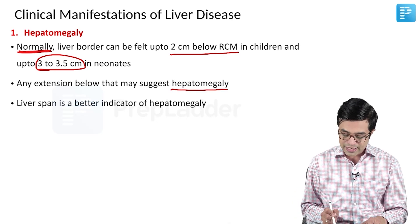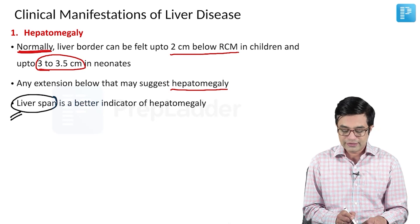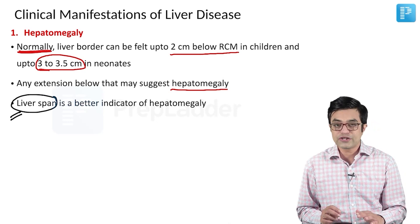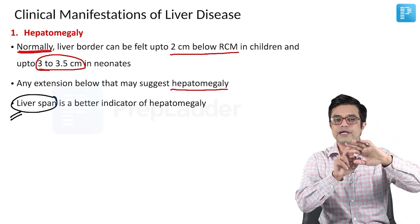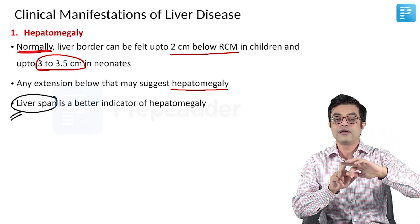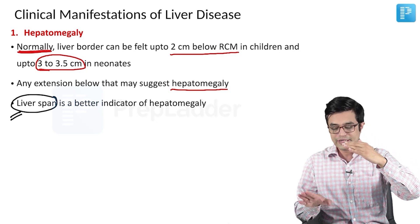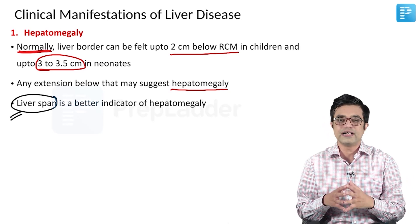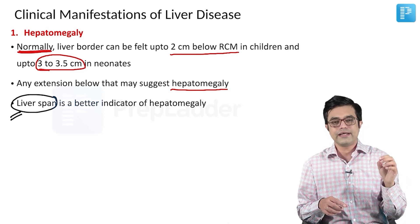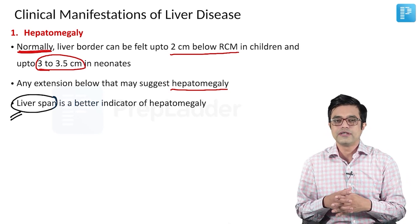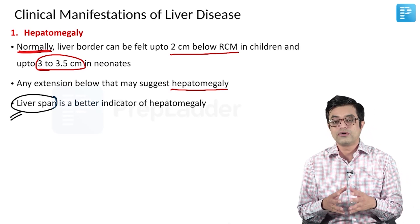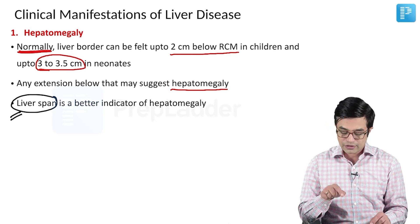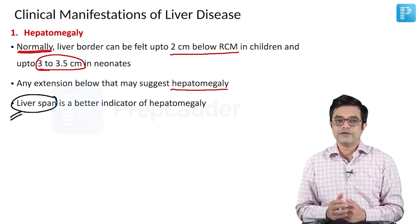Liver span is a better indicator of hepatomegaly than simply palpating for the liver border. To check for liver span, you do percussion starting from the top in the right mid-clavicular line, and the place where the dull note comes is considered to be the upper border. Then you do palpation to find the lower border, and the measurement between the two gives you the approximate liver span. There are age-related normograms and cutoffs. Liver span, although not entirely accurate, is a more sensitive clinical indicator of hepatomegaly than simply checking for the lower liver border.